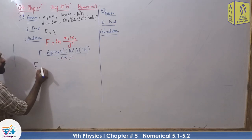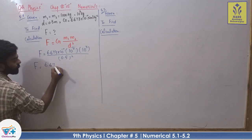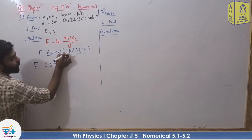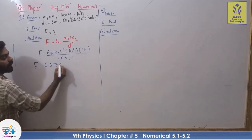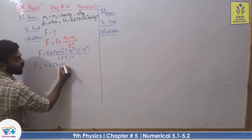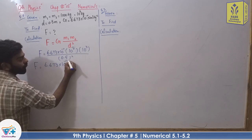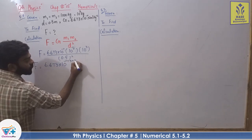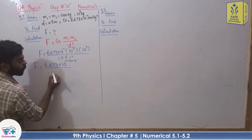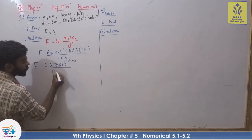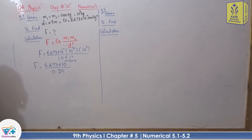Force F is equal to 6.673. Base is the same as 10, so we add the powers: minus 11 plus 3 plus 3. Divided by 0.5 squared, which equals 0.25.